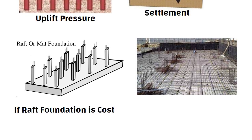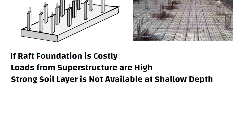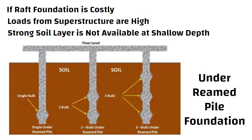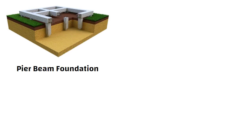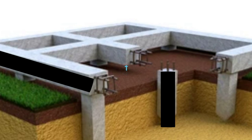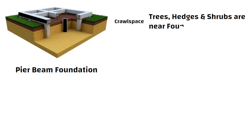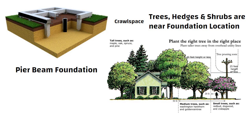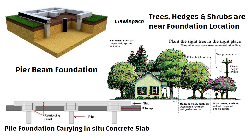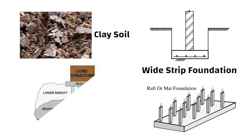Raft or mat foundation is the best foundation type to be built on clay soil. If raft foundation is costly, loads from the superstructure are high, or a strong soil layer is not available at shallow depth, then under-reamed pile foundation should be selected. In case of clay soil, pier beam foundation can also be used. You can see in this picture, beams are connected to each other and piers are going inside the ground. There is some space between beam and ground which is called a crawl space. If trees, hedges, and shrubs are close to the foundation location, or there is a plan to plant these trees near the structure in the future, then pile foundation carrying in-situ concrete slab can be used. In short, for clay soil, wide strip foundation, raft foundation, and pile foundation can be used.